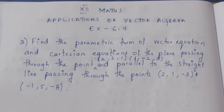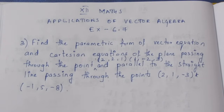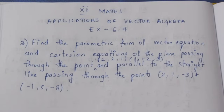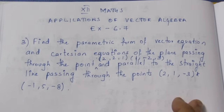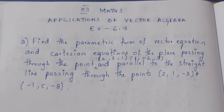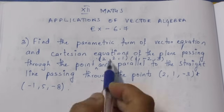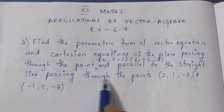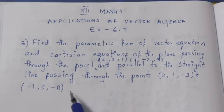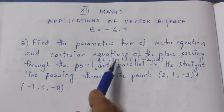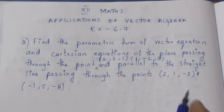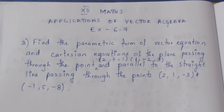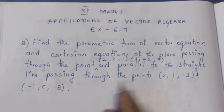Hello. In 12th-grade applications of vector algebra, Exercise 6.7, third sum. Question: Find the parametric form of a vector equation and the Cartesian equation of the plane passing through two points and parallel to a straight line. The plane has two points and one straight line parallel to it.